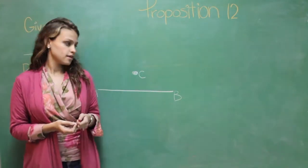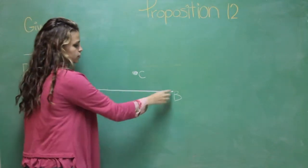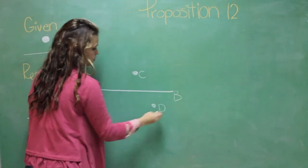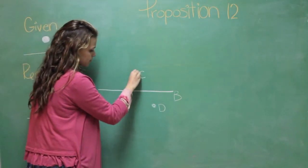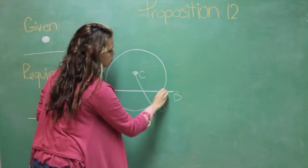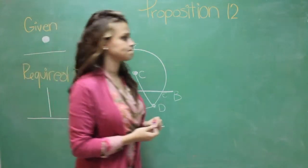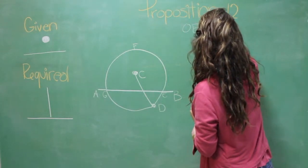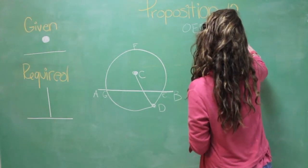For let a point D be chosen random in the other side of the infinite straight line. With center C and distance CD, the circle E, F, G can be described. We know this because of postulate 3.